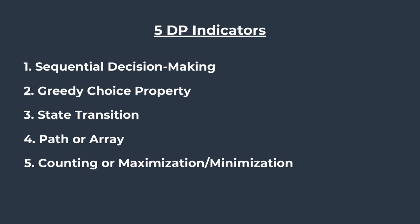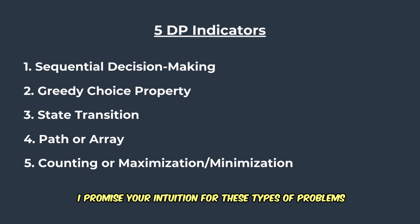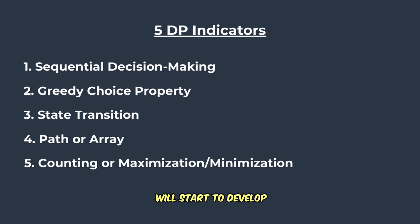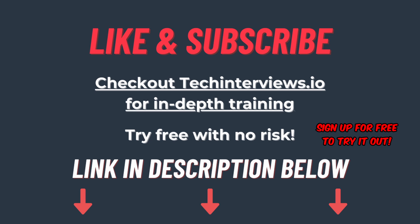Those are the five patterns or indicators you can look out for whenever you're working on a problem to determine if you can apply dynamic programming to it. If you keep these indicators in mind, I promise your intuition for these types of problems will start to develop. Make sure to press that like button if you found this helpful, and subscribe to stay tuned for part two, which will cover the difference between bottom-up and top-down dynamic programming. Alright, I'll see you guys in the next one.